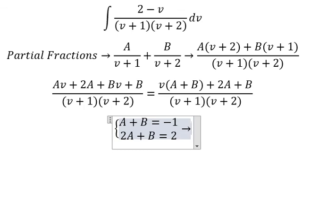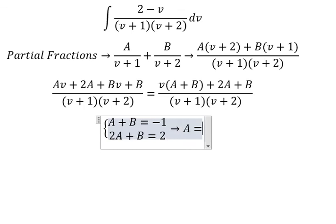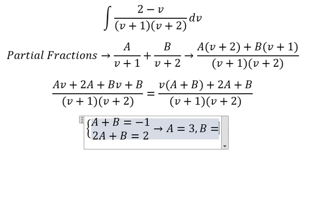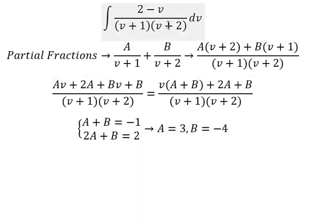So we can find the solution of A and B. So we have A equal to number 3, B equals to negative number 4. So we put A and B in here.